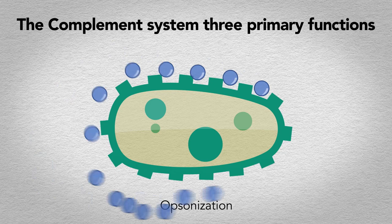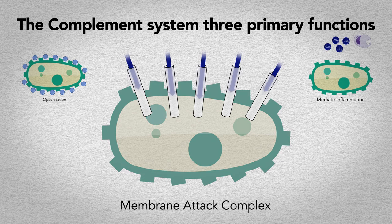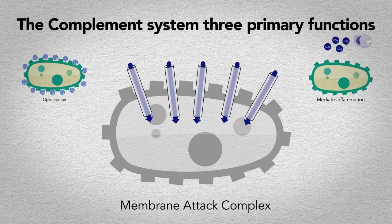The complement system has three primary functions. The first is the opsonization of target cells, immune complexes, and cellular debris. The second is the mediation of local inflammation. The third is to directly kill targeted cells through osmotic rupture via the terminal complement complex, also known as the membrane attack complex.